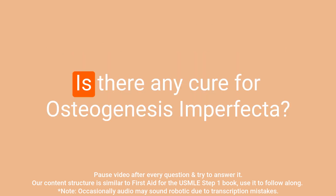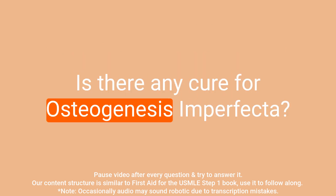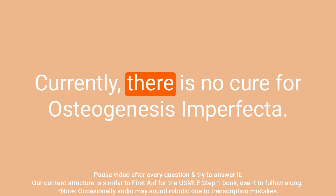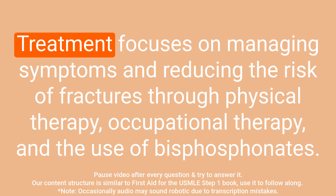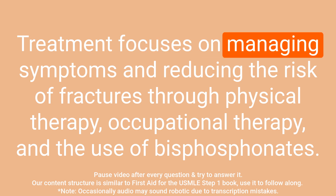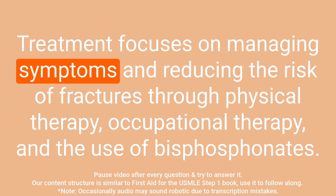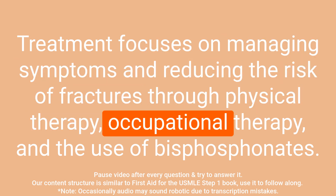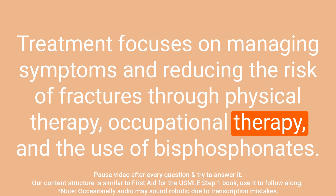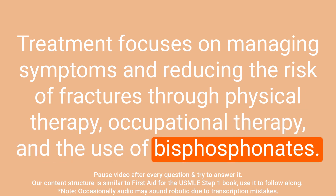Question: Is there any cure for osteogenesis imperfecta? Answer: Currently, there is no cure for osteogenesis imperfecta. Treatment focuses on managing symptoms and reducing the risk of fractures through physical therapy, occupational therapy, and the use of bisphosphonates.